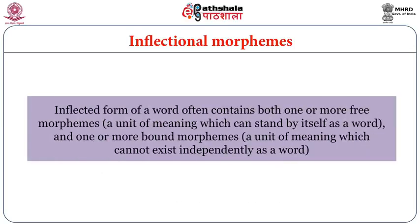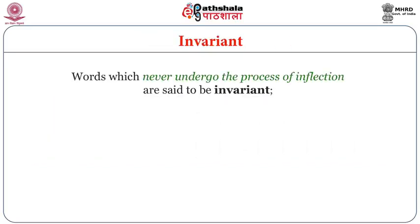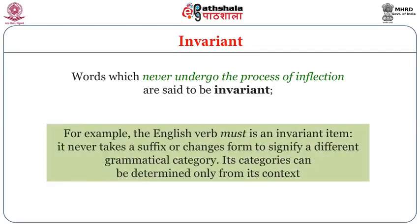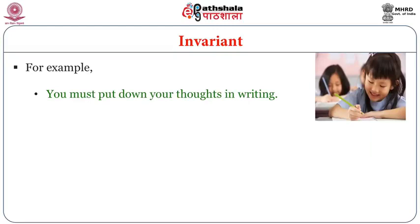An inflected form of a word often contains both one or more free morphemes — a unit of meaning which can stand by itself as a word — and one or more bound morphemes, that is a unit of meaning which cannot exist independently. Words which never undergo the process of inflection are said to be invariant. For example, the English verb 'must' is an invariant item — it never takes a suffix or changes form to signify a different grammatical category.